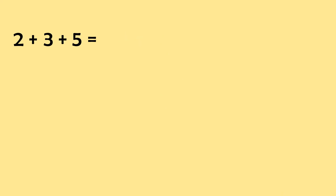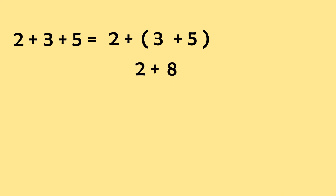Now, let us do this a second time and group 3 plus 5. First, copy the 2, and surround with parentheses the 3 and 5. So, 3 and 5 is equal to 8, and copy the 2. So, 2 plus 8 is equal to 10. We get the same answer. This is the associative property of addition — changing the grouping does not change the sum.